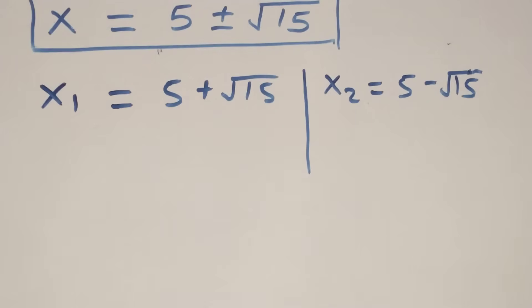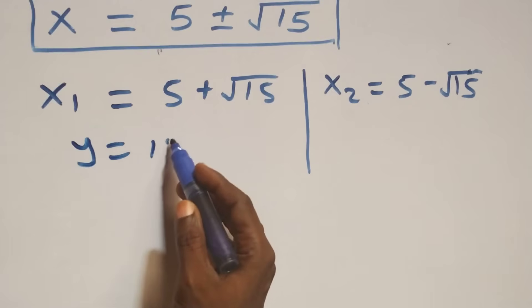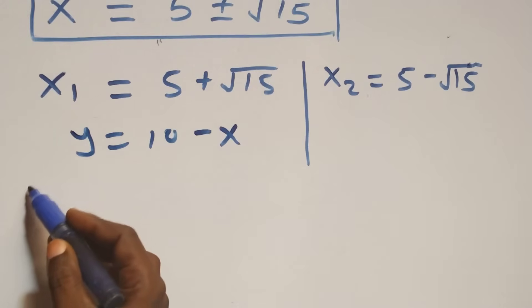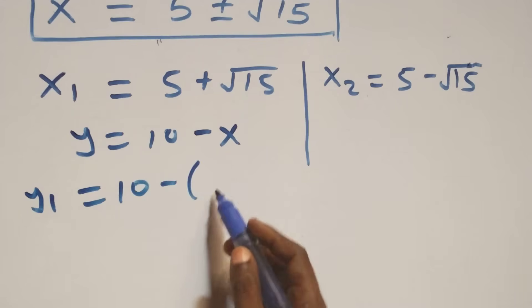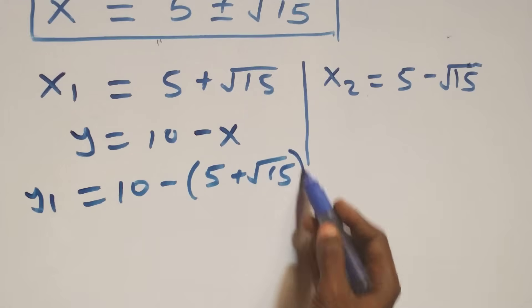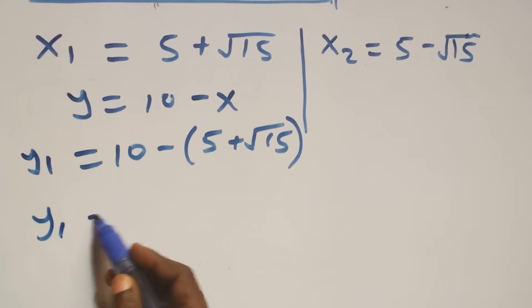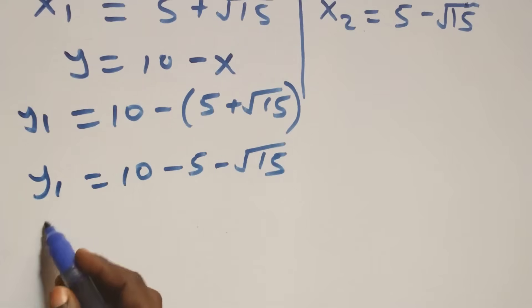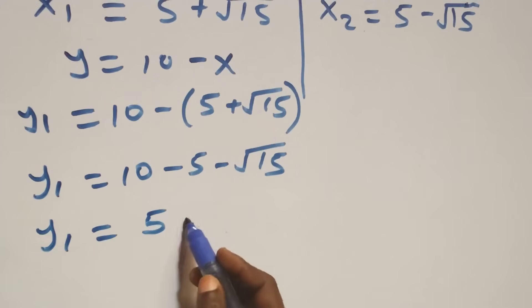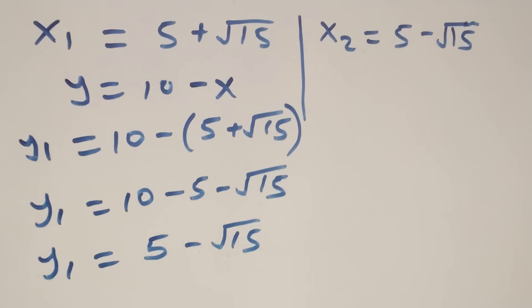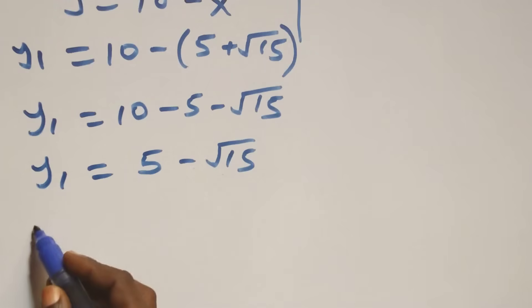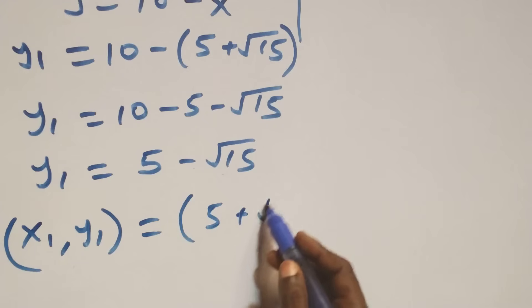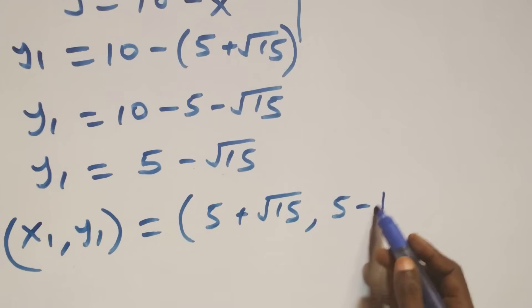We find the corresponding values of y from equation three, which is y equals 10 minus x. For x₁: y₁ equals 10 minus (5 plus √15), which expands to 10 minus 5 minus √15, giving y₁ equals 5 minus √15. So the first solution set is (x₁, y₁) equals (5 plus √15, 5 minus √15).